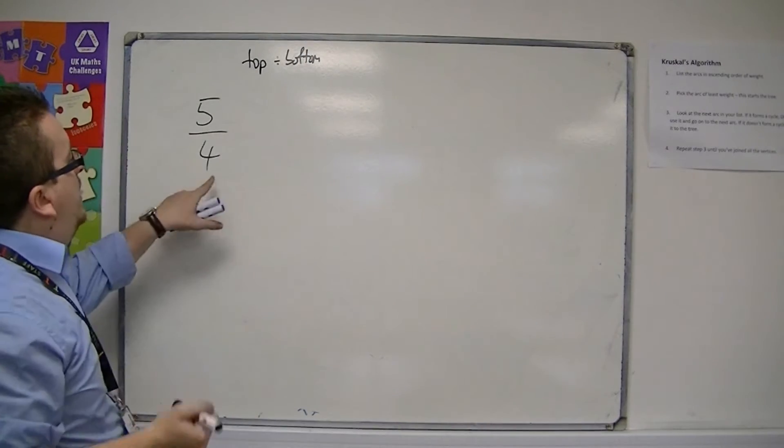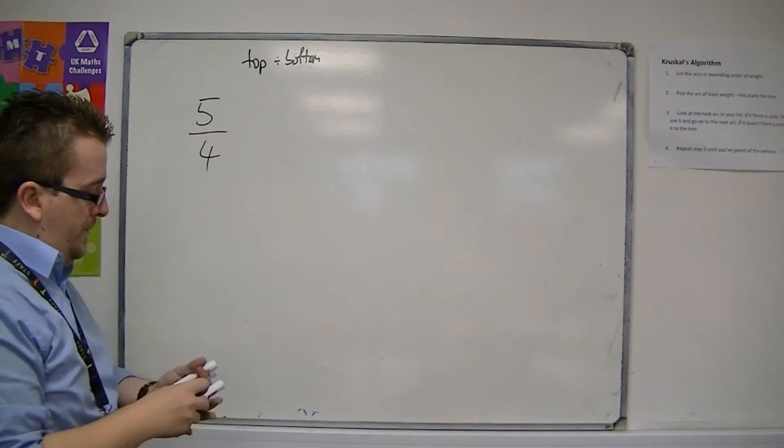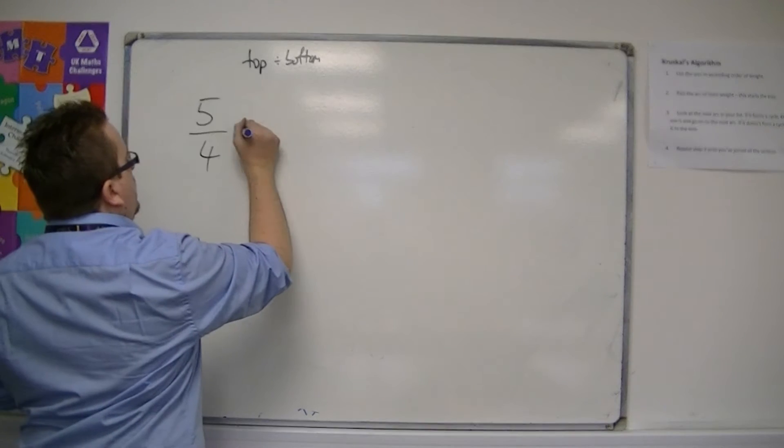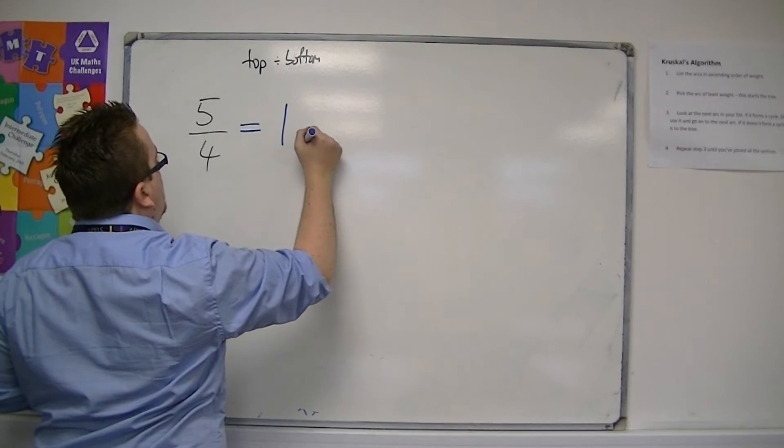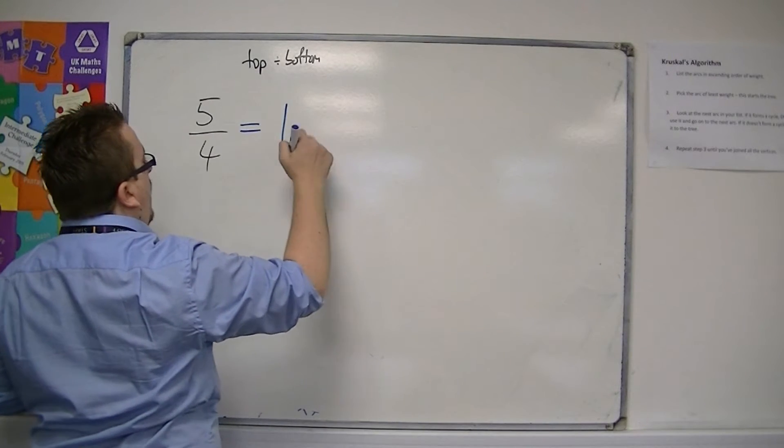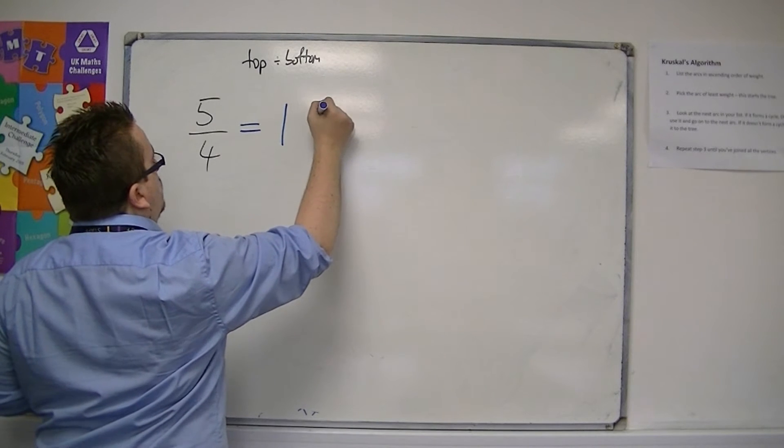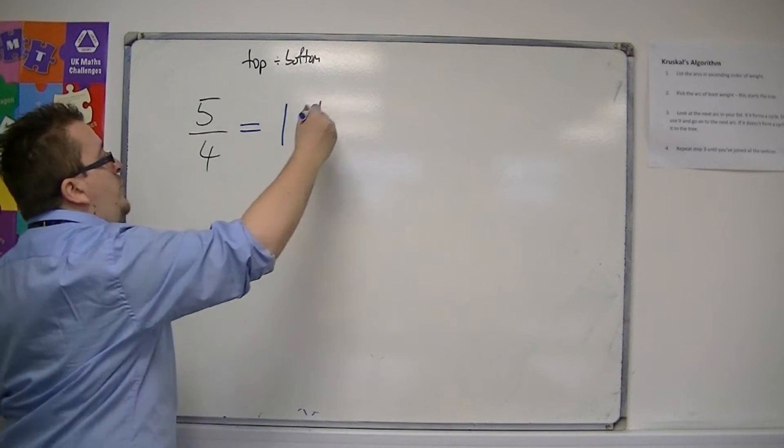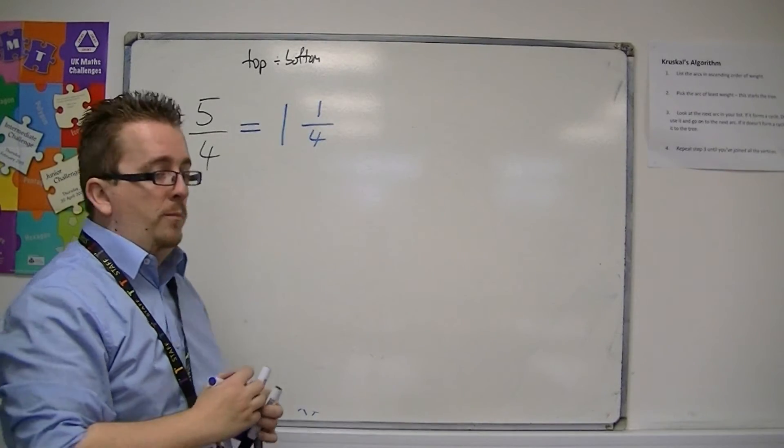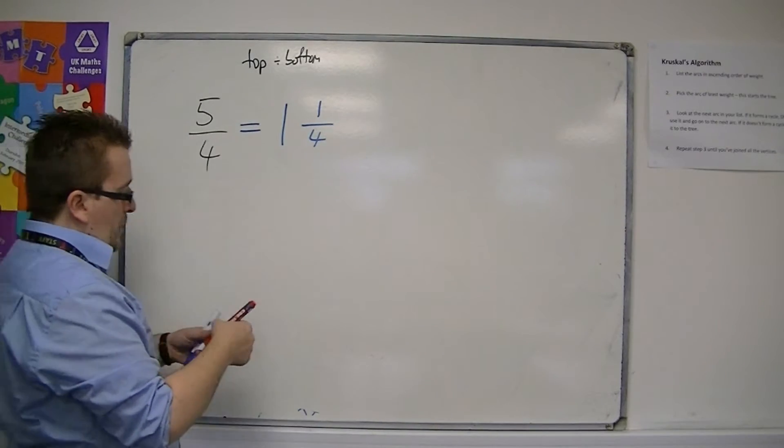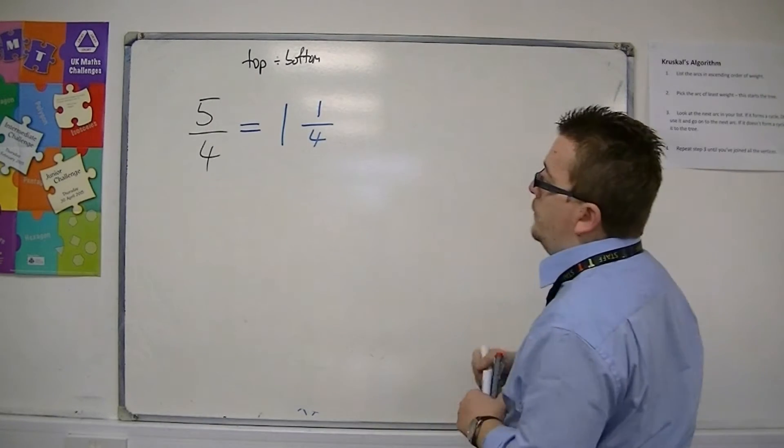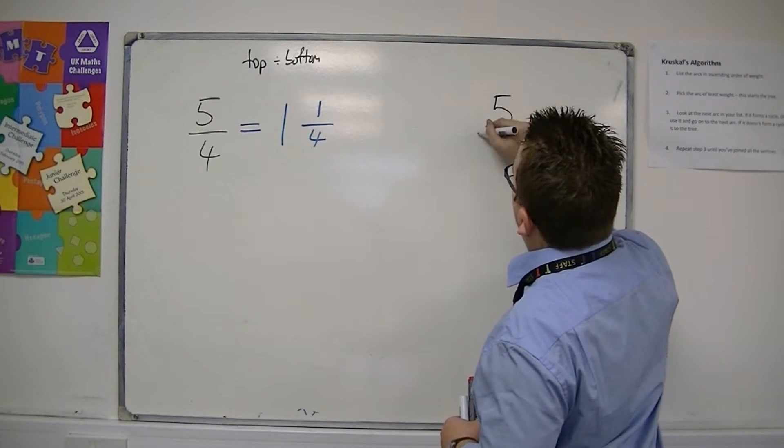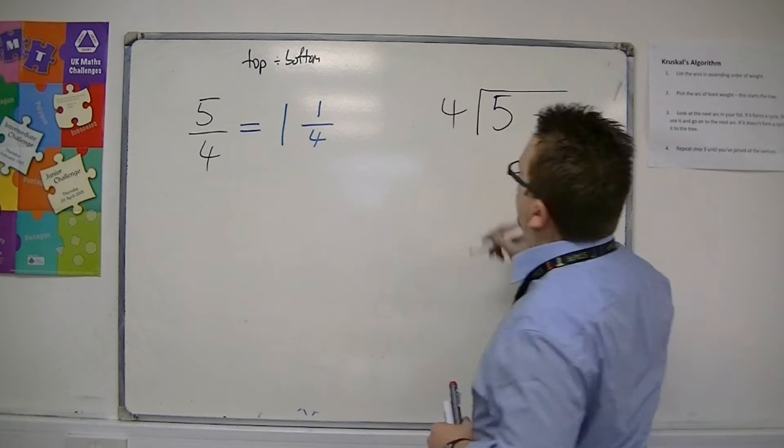So you look at how many 4s go into 5, which is 1, remainder 1. So the remainder gets put into the new numerator of a smaller fraction. So if you're confused at that, think of it this way, using short division.